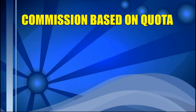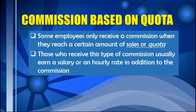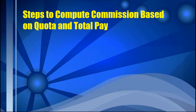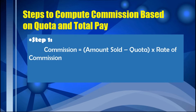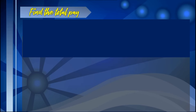Third type of commission: commission based on quota. Some employees only receive a commission when they reach a certain amount of sales or quota — the amount of sales or production assignment. Those who receive this commission usually also earn a salary or hourly rate. The formula is: Commission = (Amount Sold − Quota) × Commission Rate. Total gross pay = Salary + Commission.